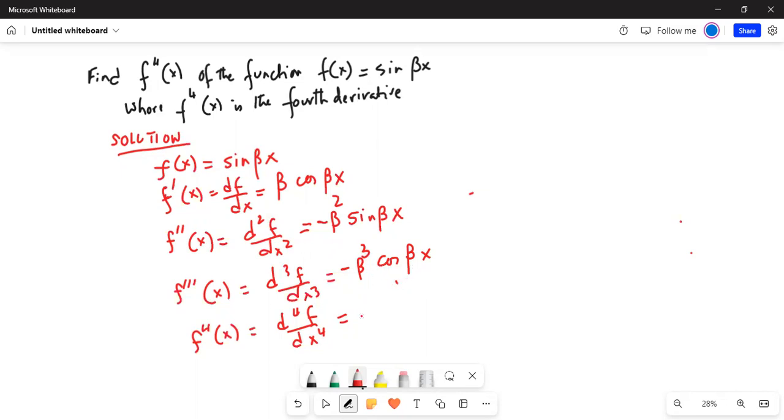So we have two negatives. This will be minus β³ times negative β, and the derivative of cos(βx) is negative sin(βx), which equals... two minuses will make this positive β⁴ sin(βx).